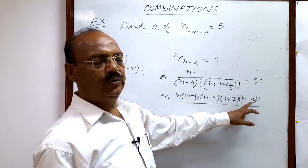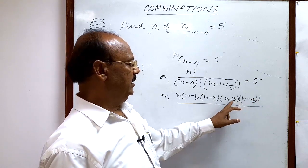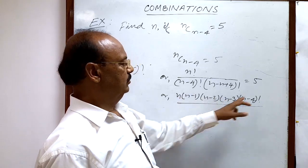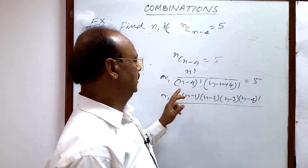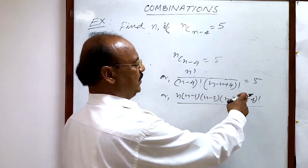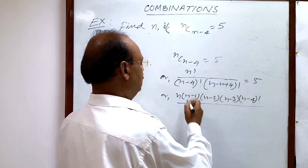So finally, this is n factorial, and we have expanded it like this so that in the denominator we are having (n-4) factorial, which will cancel out.